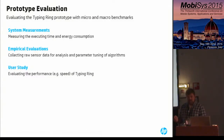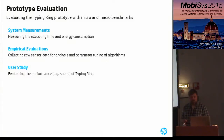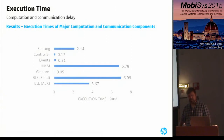We performed three types of evaluation for Typing Ring. First, system measurements where we measure execution time and energy consumption. Second, an empirical evaluation where we collect raw sensor data for analysis and parameter tuning. And third, a user study to evaluate performance — for example, the typing speed achievable and user experience.